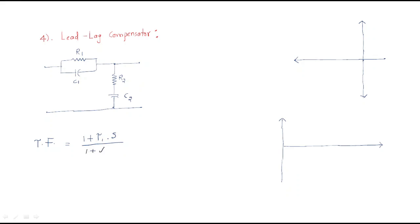... multiplied by (1 + τ₂s) / (1 + β·τ₂s). Here τ₁ represents the first circuit — the lead circuit, which is the parallel combination of R₁ and C₁. The second term with τ₂ represents the lag circuit, which is the series combination of R₂ and C₂. So the parallel combination of resistor and capacitor is always the lead circuit, and the series combination is always the lag circuit.